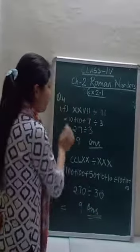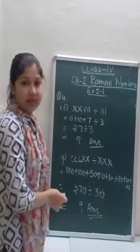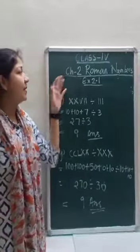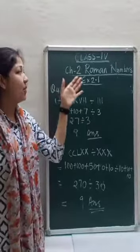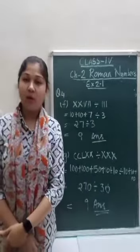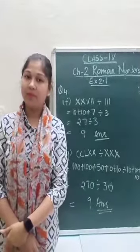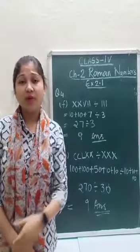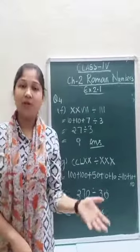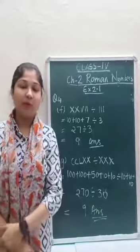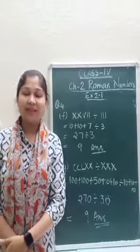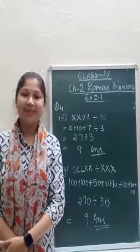So you have to do question number 4 like this. Kids, that's all for now and we have completed our chapter on Roman Numbers. As you all know, I am giving you two assignments per week to cover up April month's work, as I have joined recently. I hope you all cope up with me and send your assignments regularly. Thank you.